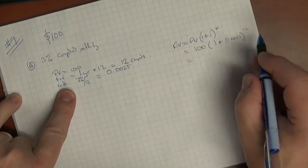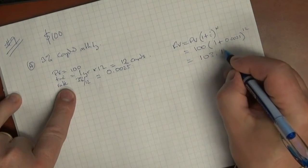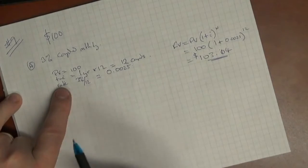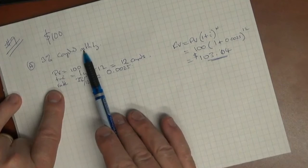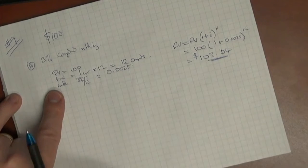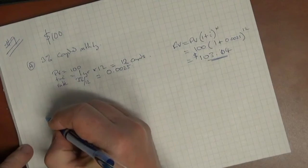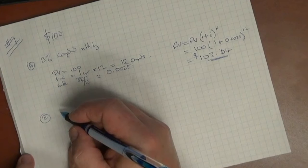So we run the numbers on that, and that comes to $103.04. So that's how much that would be worth. So if we put $100 in the bank, 3% compounded monthly, at the end of the year, you'd have $103.04. I'm just going to take a look at C as another example. You can take a look at the other ones yourself.